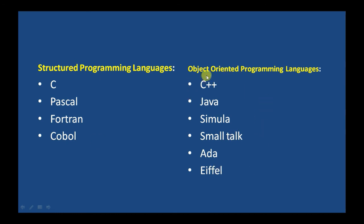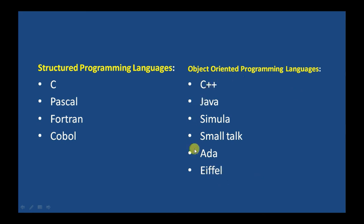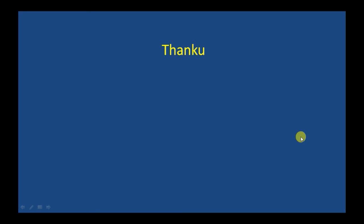Now we can see the programming languages that fall under structured programming versus object-oriented programming. Structured programming languages include C, Pascal, Fortran, and COBOL. Object-oriented programming languages include C++, Java, Simula, Smalltalk, Ada, and Eiffel. Thank you for watching this video, and don't forget to watch the next video on object-oriented programming.